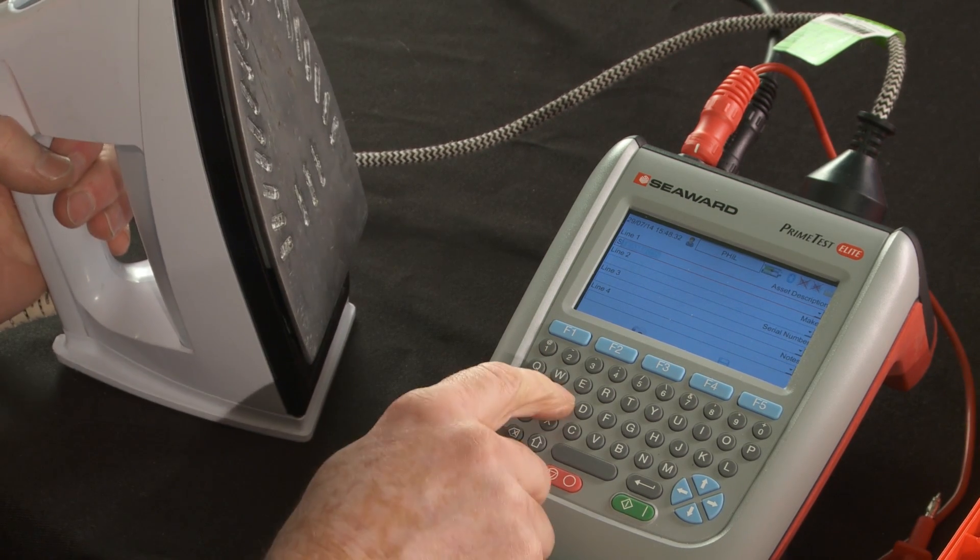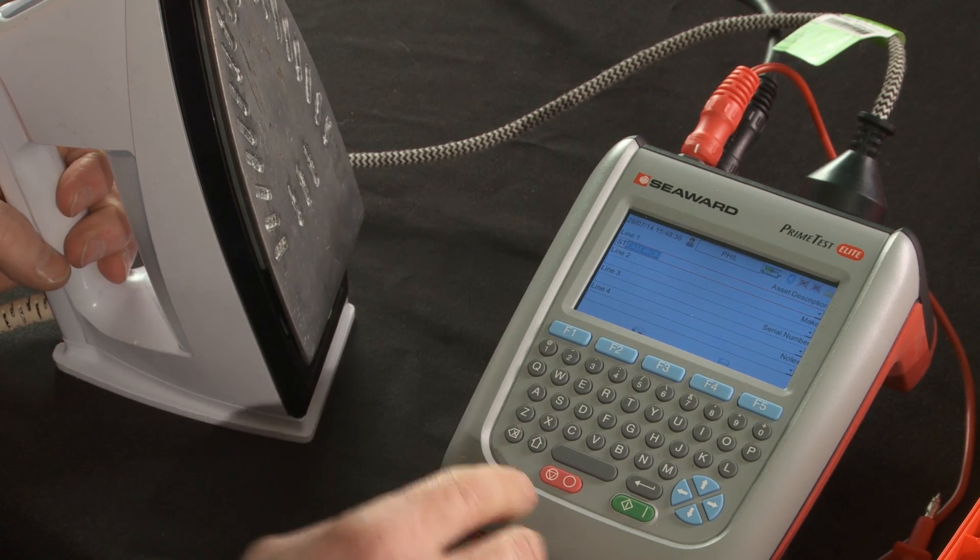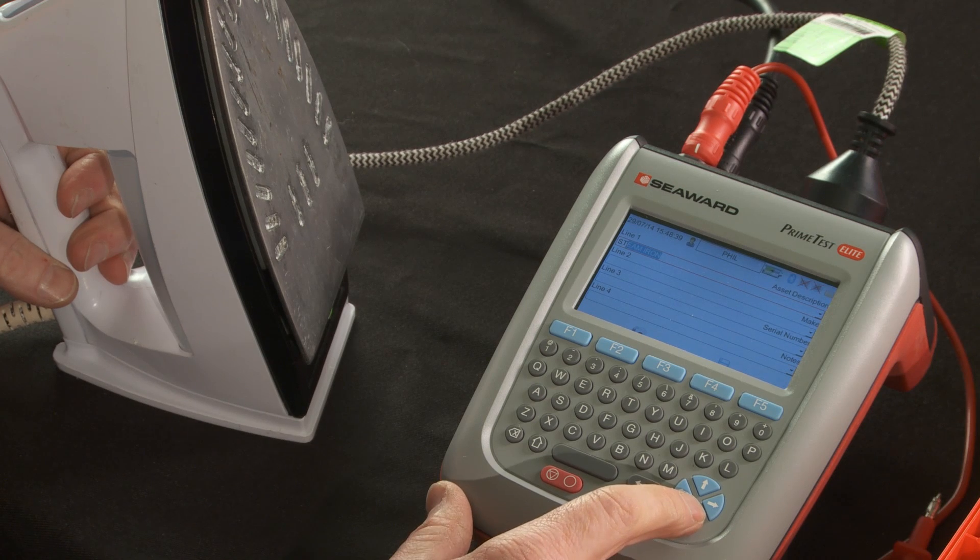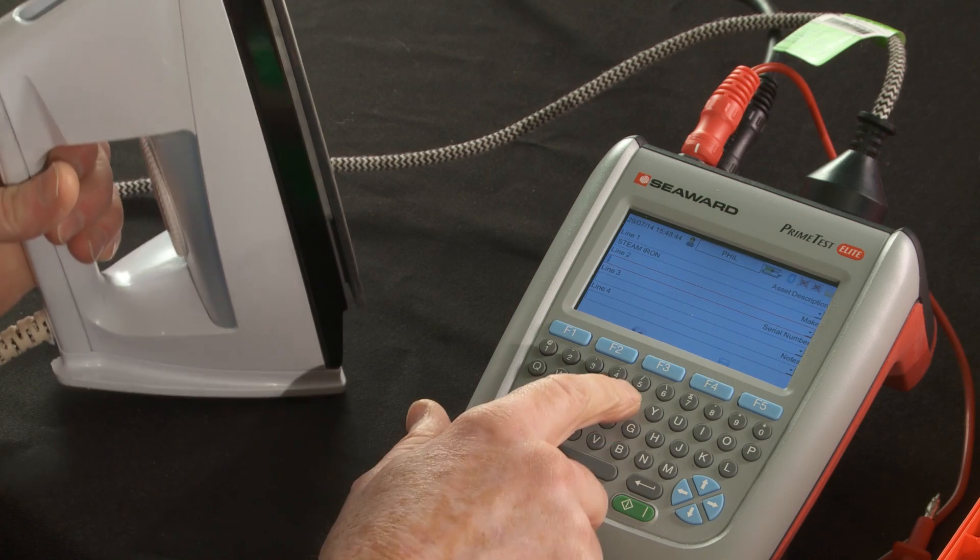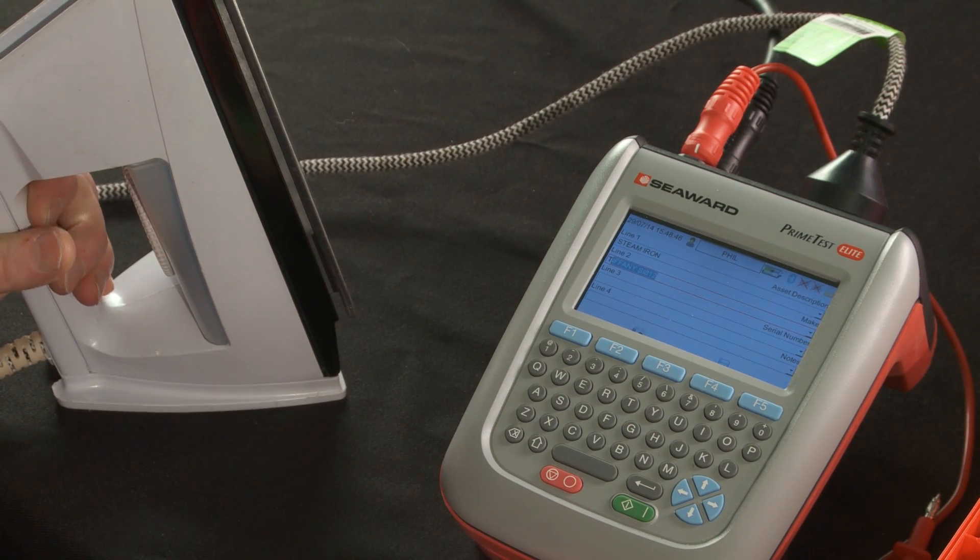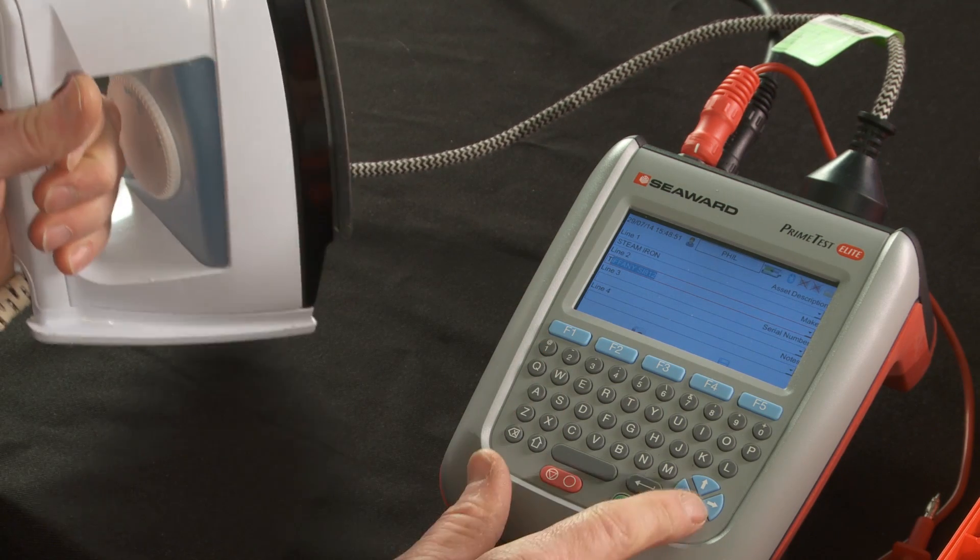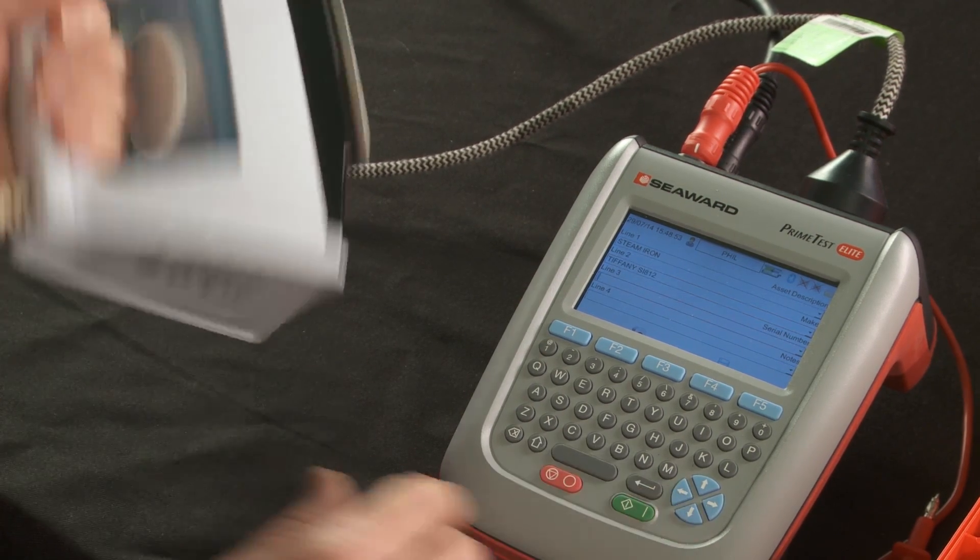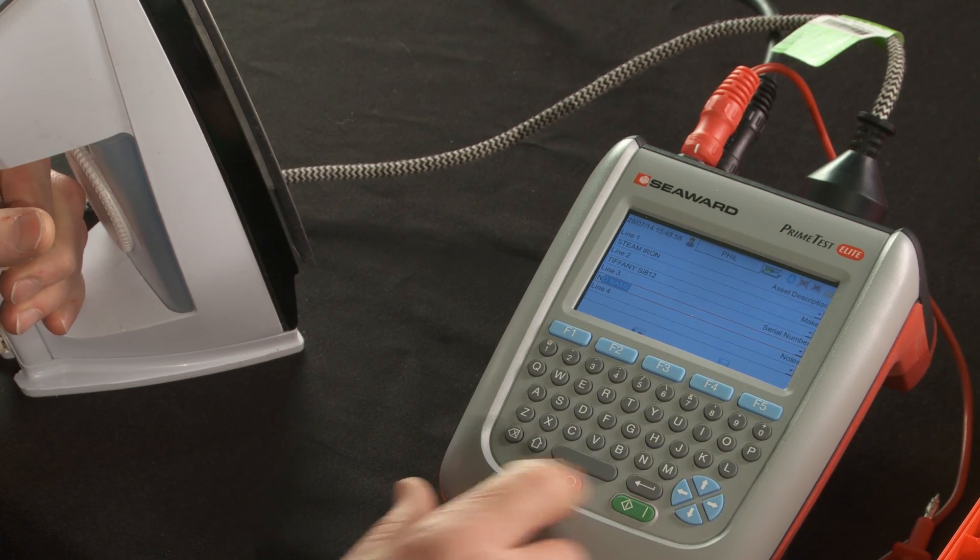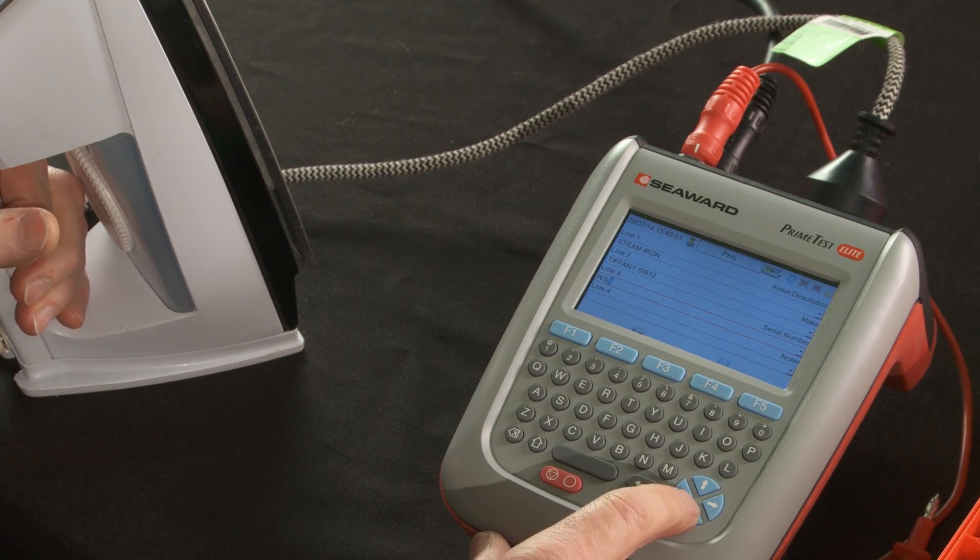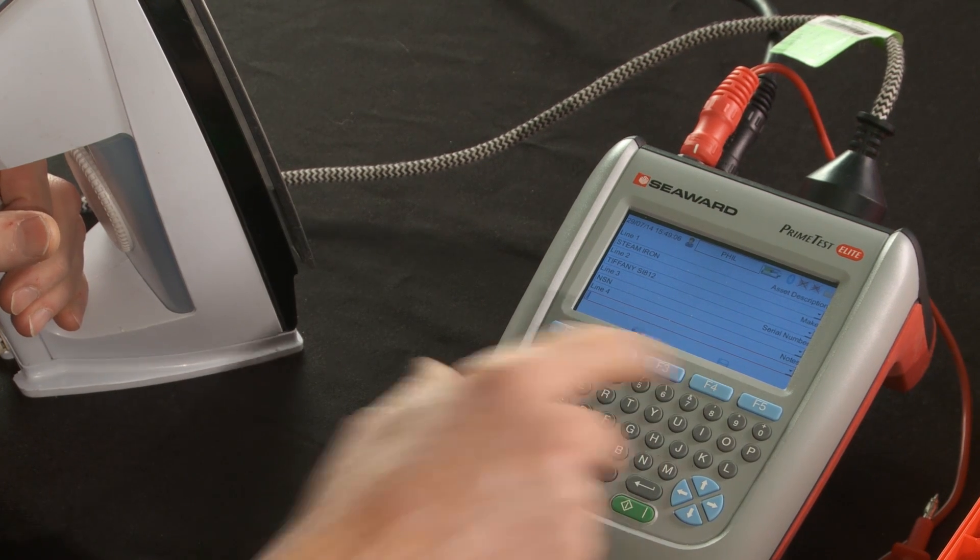Now, this is a steam iron, so I'll record that. It knows that I've used steam iron before, so it's predicted it for me. In here, the make is, well, it's a Tiffany. And it's a Tiffany S1812. So I've done one of them before. There's no serial number here. So I'll just do NSN, no serial number. And record any other information that we require. And press save.